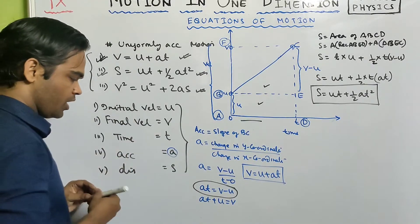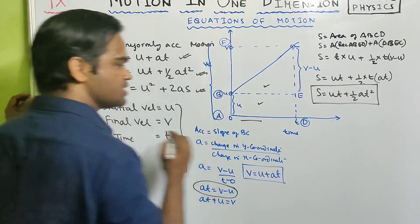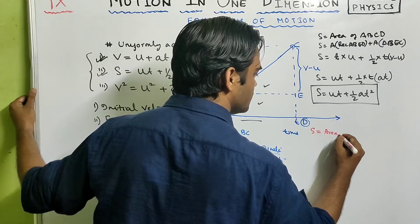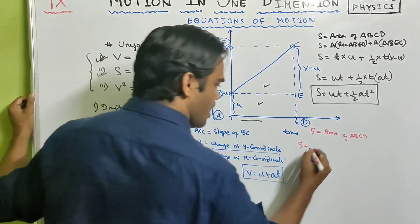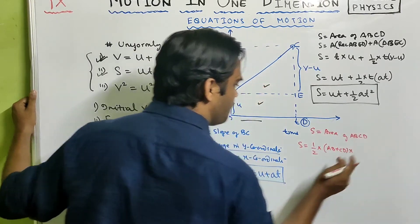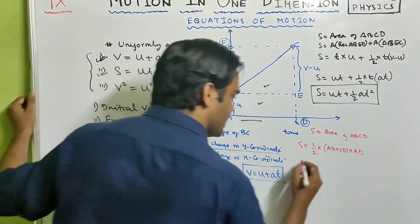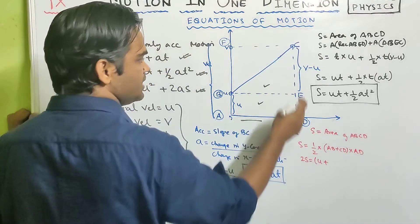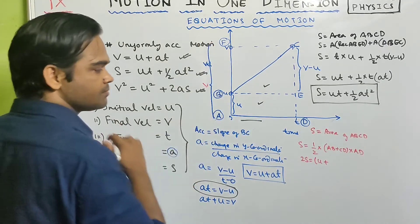Now the third equation: v squared equals u squared plus 2as. Again using the concept of distance as the area of trapezium ABCD. The area of a trapezium is half times the sum of parallel sides times the perpendicular distance between them. So 2s equals (AB plus CD) times AD. AB is u, CD is v, and AD is t.